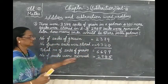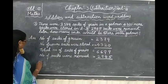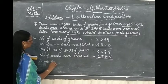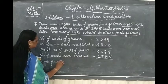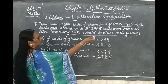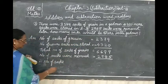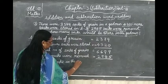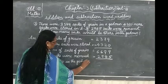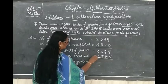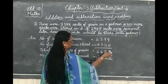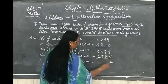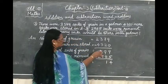Therefore, number of sacks in the godown is equal to subtract and write. 6,699 minus 2,785. 9 minus 5 is 4. Are we able to subtract 9 minus 8? No.